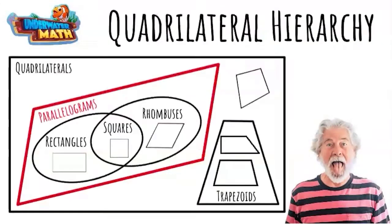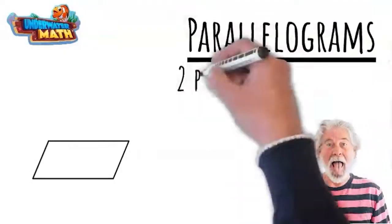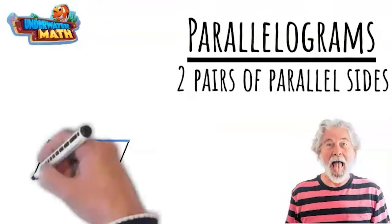Now getting back to those quadrilaterals. Be wary of those buggers, for they come in all sorts of shapes. You've got your parallelograms. They're easily recognizable by their two pairs of parallel sides.